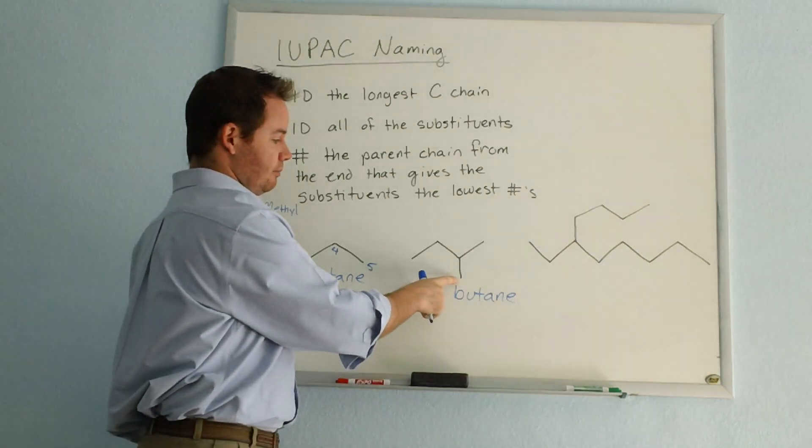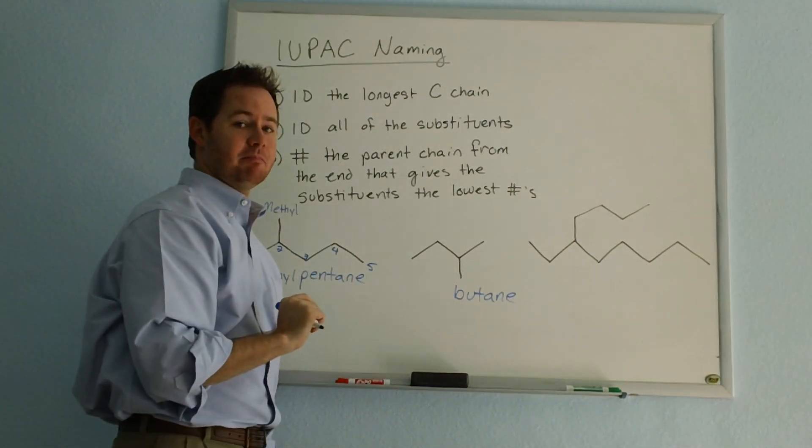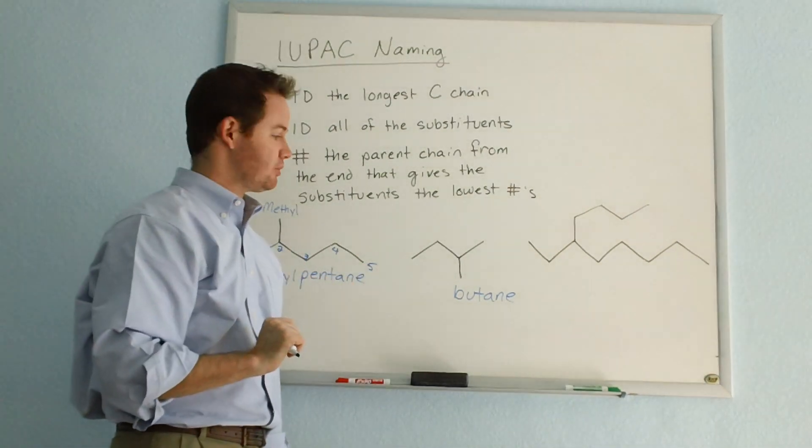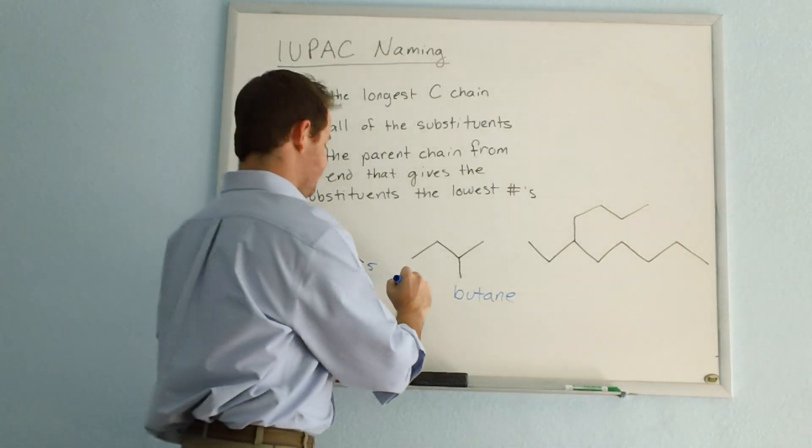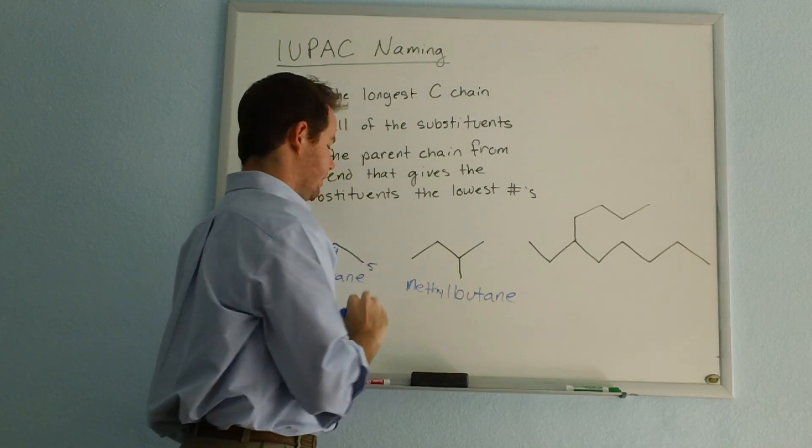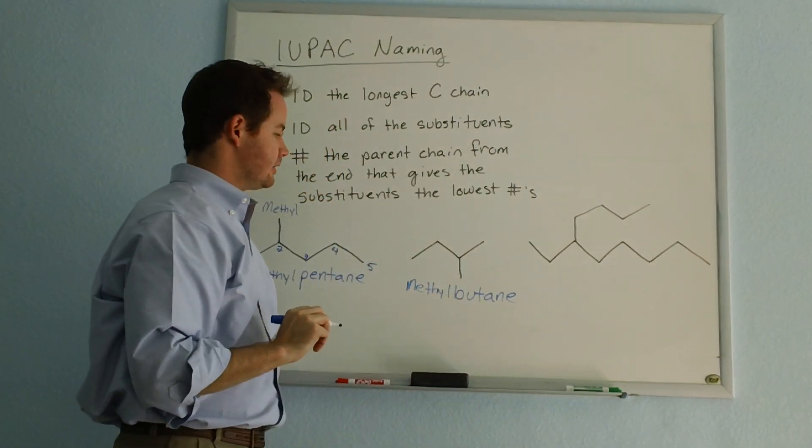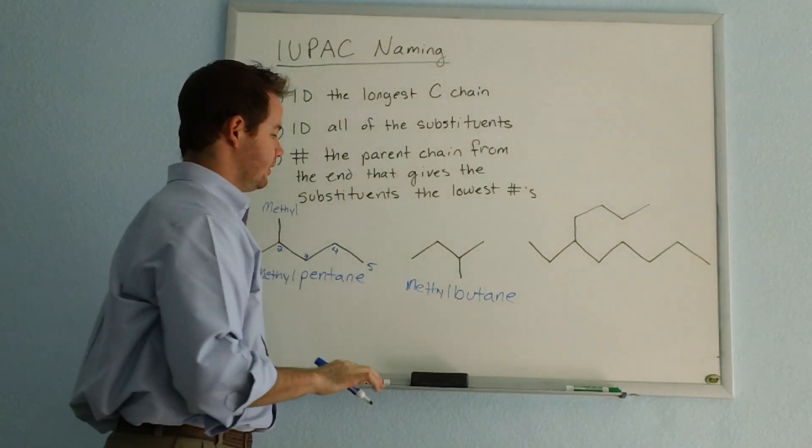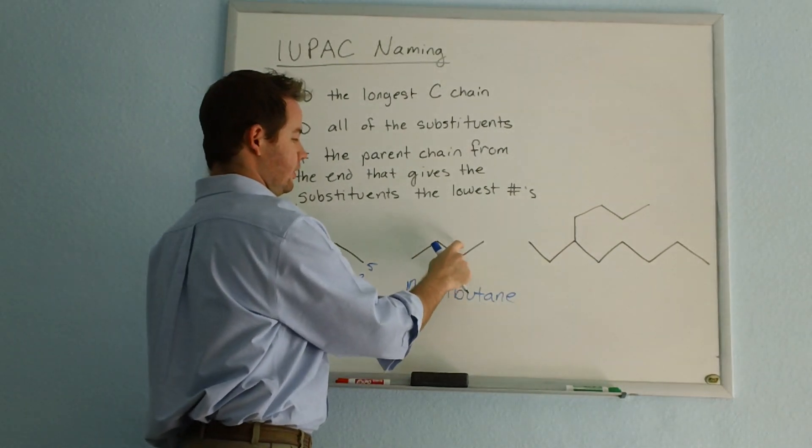Our substituents, we have one branch here, which again we can see is a methyl group, just like we had in that first problem. So we're going to have a methyl butane. And in this case, the numbering. We could number this one, two, three, four,